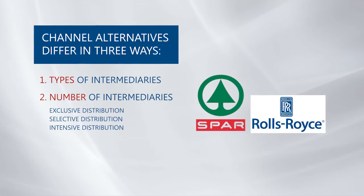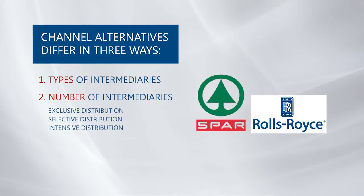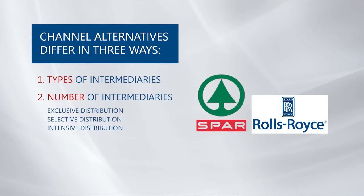We also have exclusive distribution, where you limit the number of intermediaries handling your product. This is typical for luxury products like Hermès, Rolex, or Rolls-Royce. And there is a third type in the middle — selective distribution — where you have more than one intermediary but fewer than all that would be willing to carry your product, such as the distribution of TVs, furniture, or home appliances.